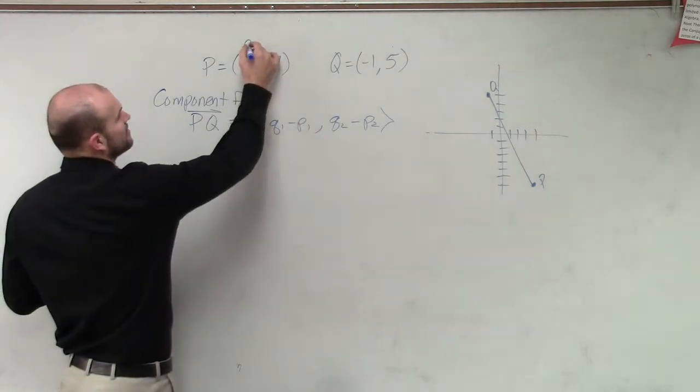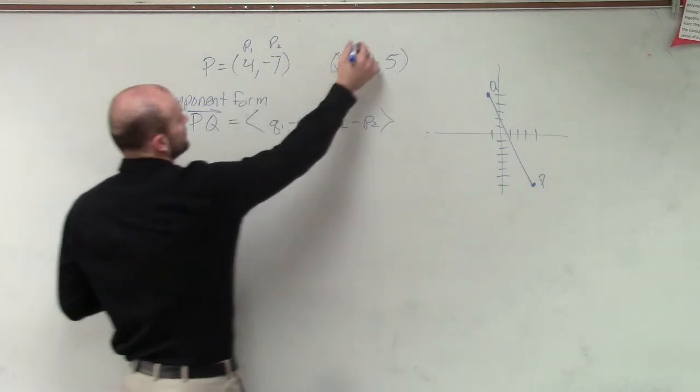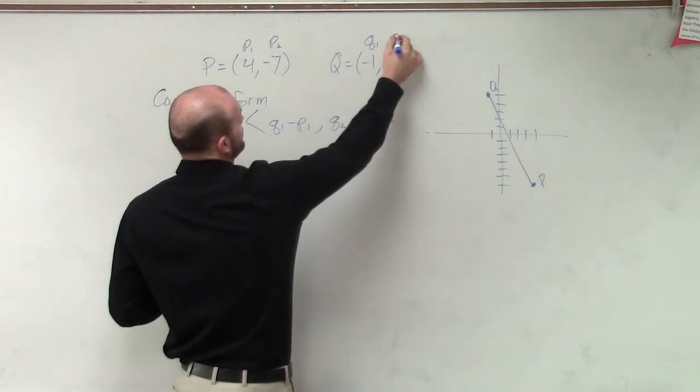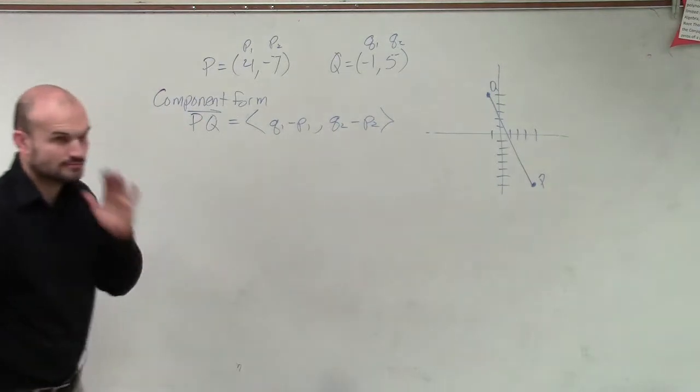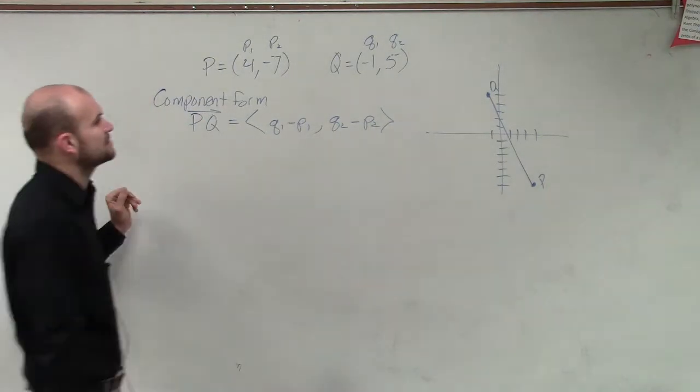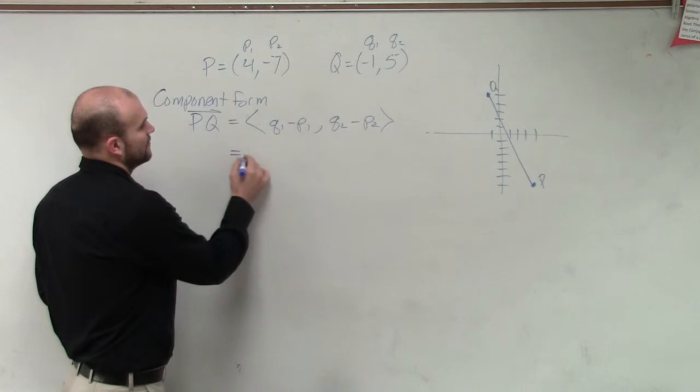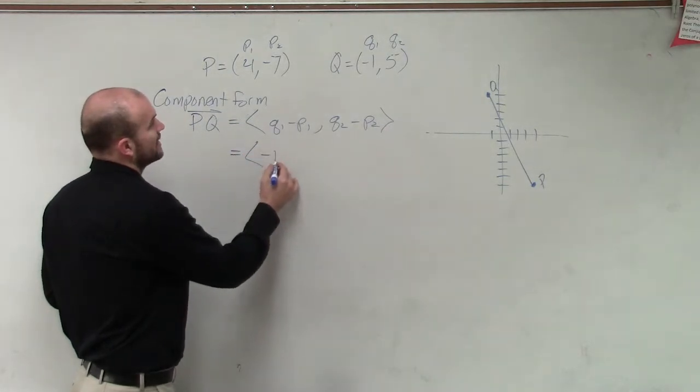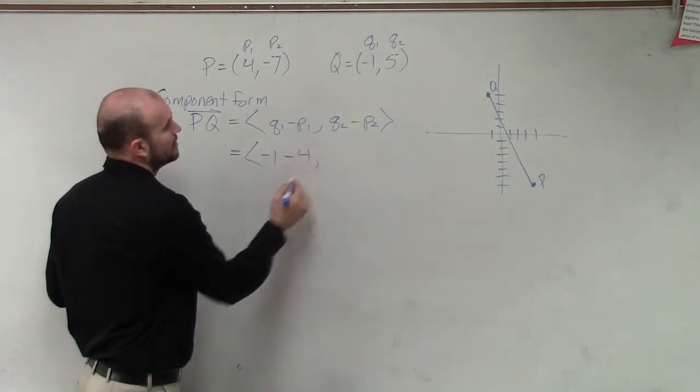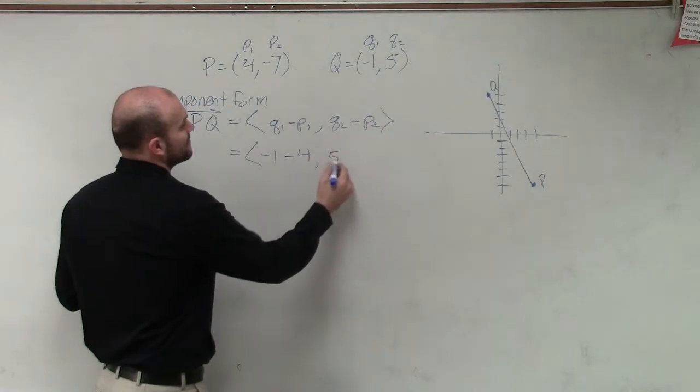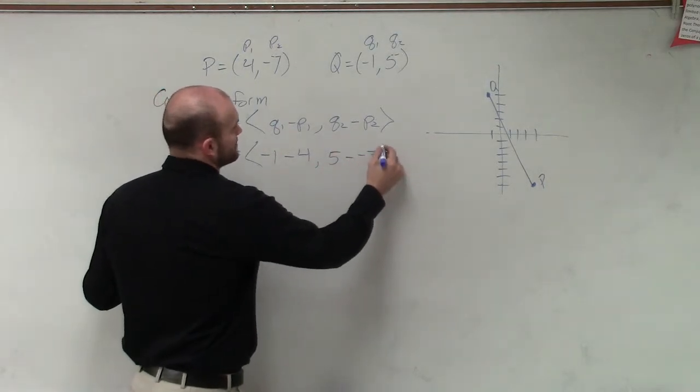Well, here's going to be P1, P2, Q1, Q2. So now let's just go ahead and represent these. Therefore, we'll have Q1, which is negative 1 minus 4 comma Q2, which is 5 minus negative 7.